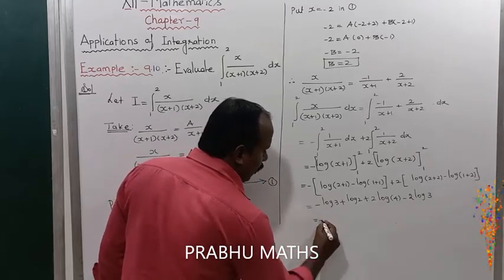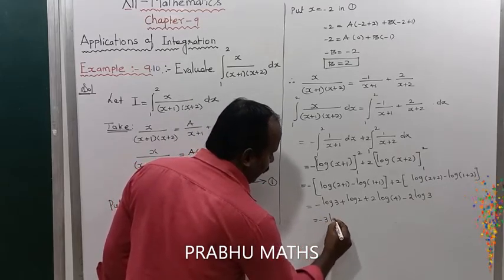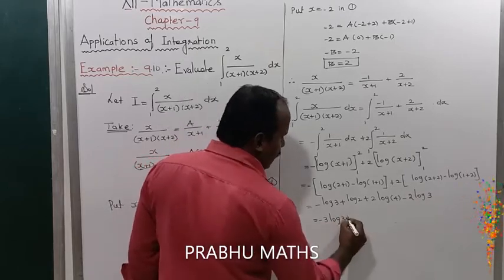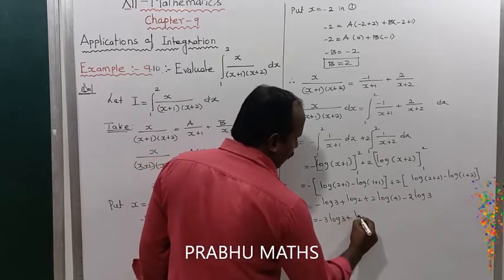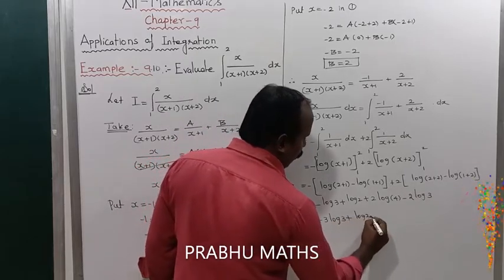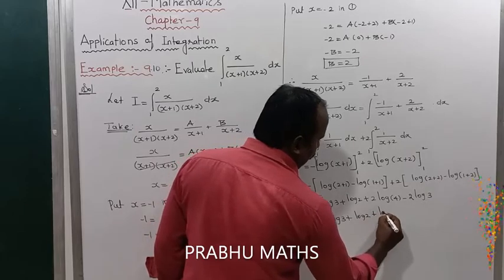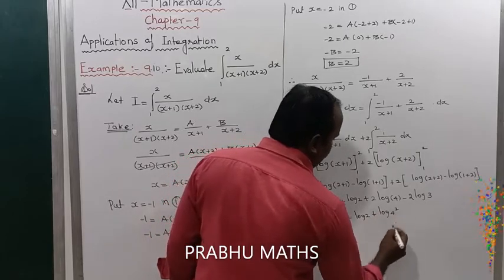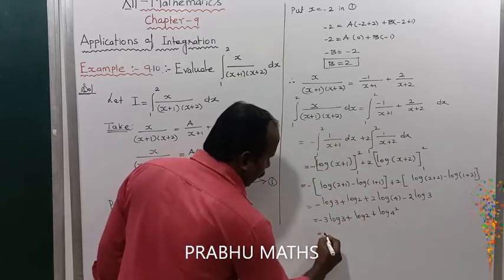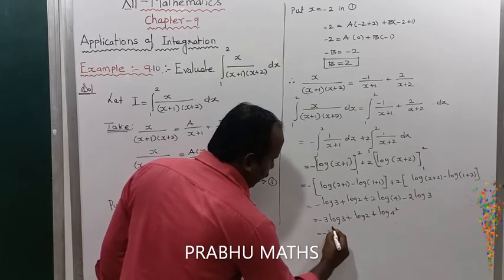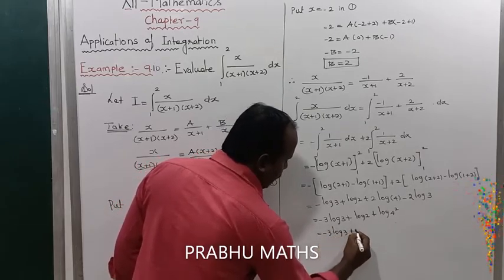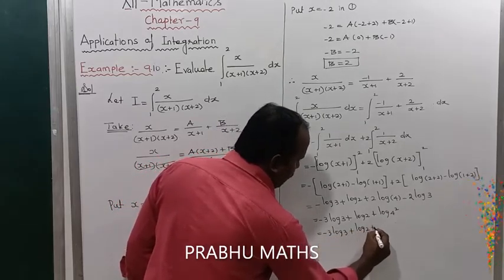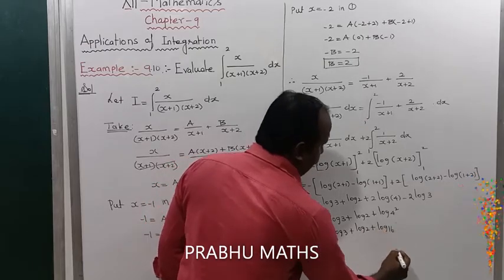This equals -3·log 3 + log 2 + log(4²), that is equal to -3·log 3 + log 2 + log 16.